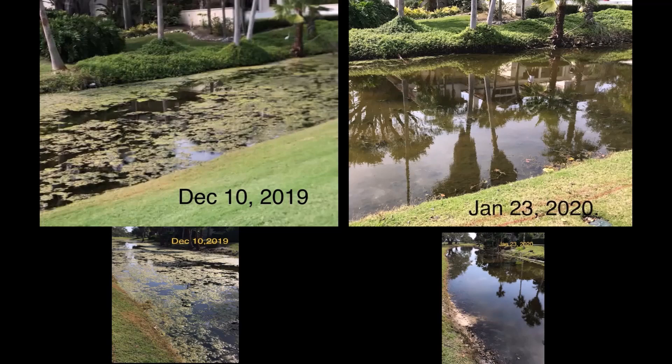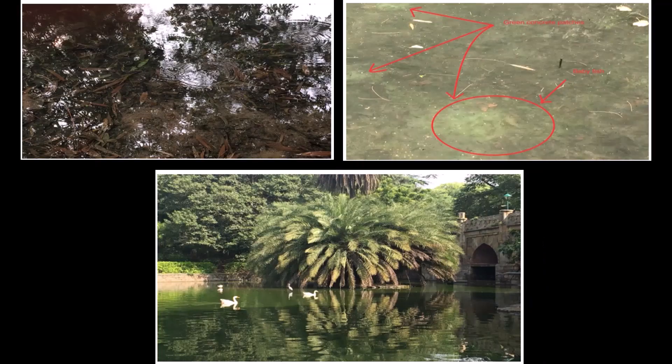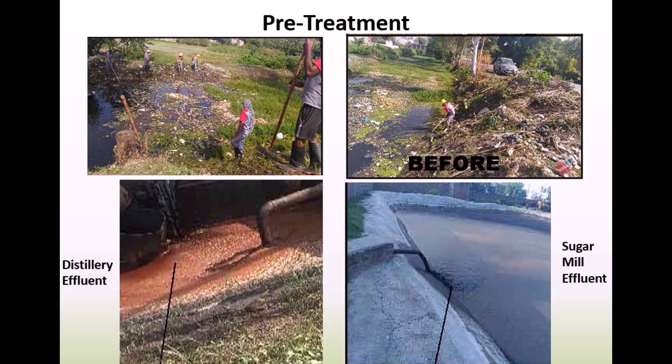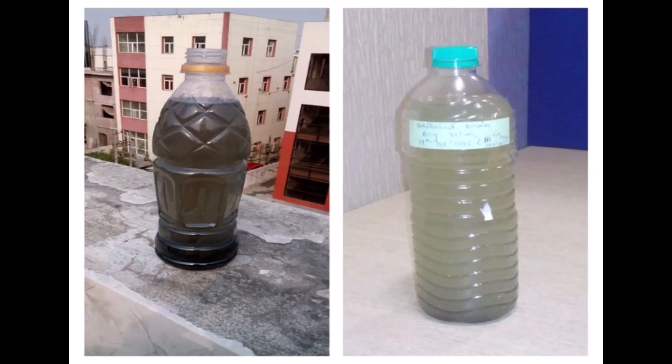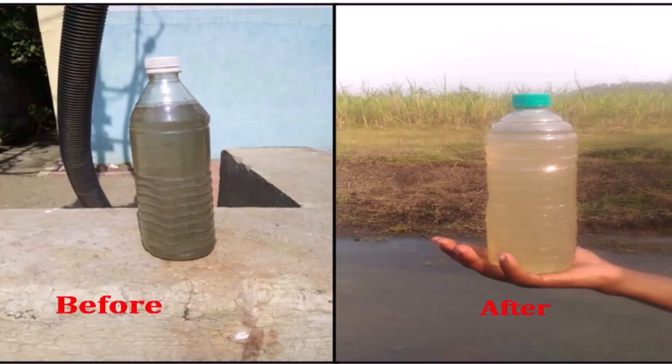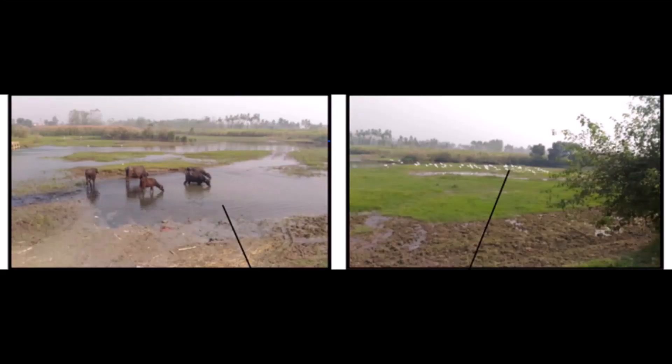This is a location where sugar mill effluents were released into a water body and the water quality was extremely poor — but on the bottom right, you can see how the clarity of the water has improved. These are the before and after water samples, and evidently the treatment has worked. Even animals which used to shy away from the untreated water body now come over to drink water from the treated pond.